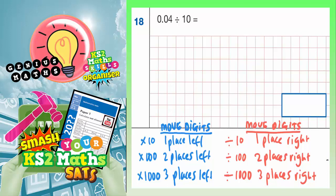Question 18: 0.04 divided by 10. Well, as soon as you see times 10, times 100, times 1,000 or divide by 10, divide by 100, divide by 1,000,